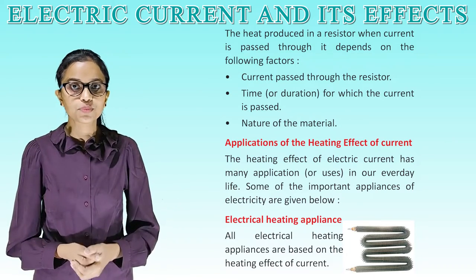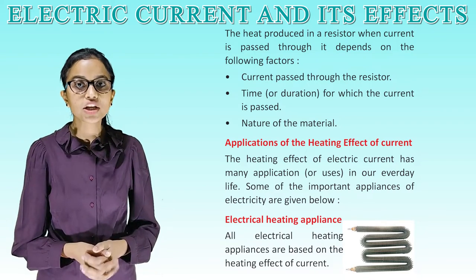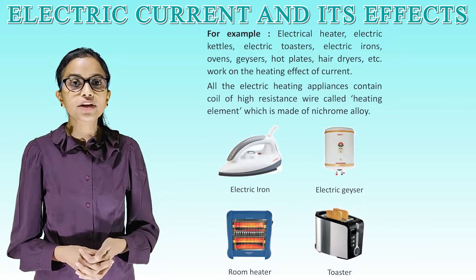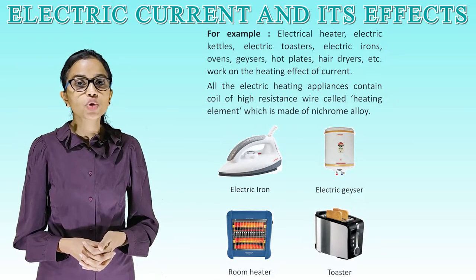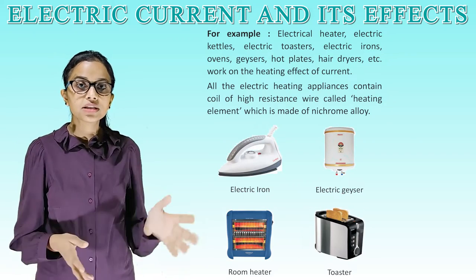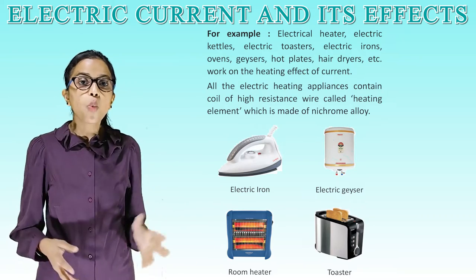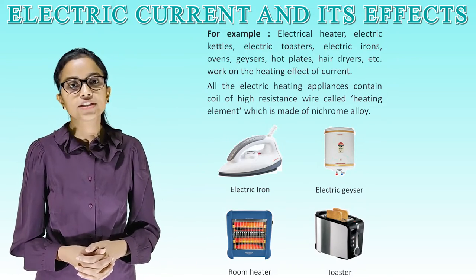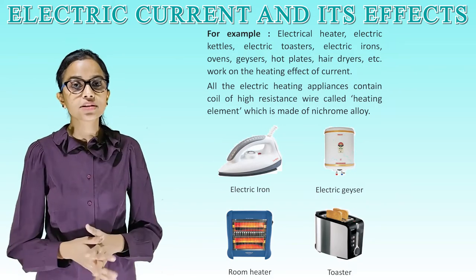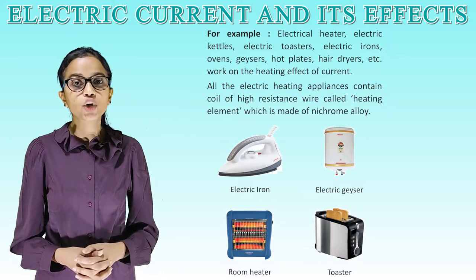Application of the heating effect of current. All electrical heating appliances are based on the heating effect of current. For example, electrical heaters, electric kettles, electric toasters, electric irons, ovens, geysers, hot plates, hair dryers, etc. work on the heating effect of current. All electric heating appliances contain a coil of high resistance wire called a heating element, which is made of nichrome alloy.